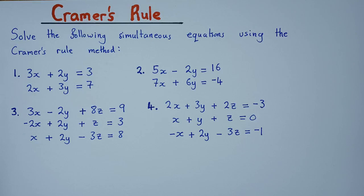Hi guys, today we'll be looking at how to solve simultaneous equations using a method known as Cramer's rule. Cramer's rule is used to solve 2x2, 3x3, even 4x4 matrix systems. The first thing you need to know is how to determine the determinants of a 2x2 or 3x3 matrix. I've dropped a link in the description just in case you don't know how to find determinants, so go through that first.